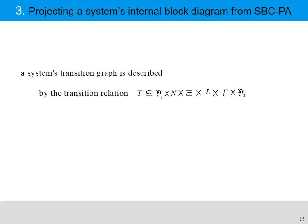Chapter 3 discusses how to project a system's internal block diagram from SBC process algebra. We say that a system transition graph can be described by a transition relation T with six attributes.